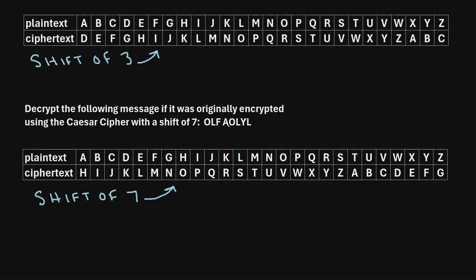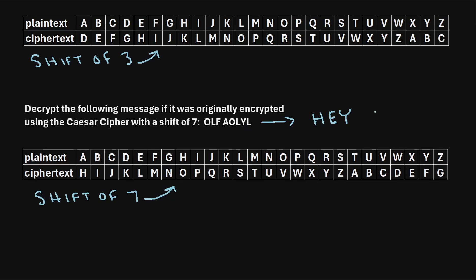To decrypt this cipher text, we start with the first letter O, find it in the cipher text row, and we can see that maps to a plain text of H. Next, we move on to L — find that in the cipher text row, and that maps to the plain text E. Then we look at F in the cipher text row, which maps to Y. We'll just continue in this manner until we have decrypted the entire message, and we find that the decrypted message says 'hey there.'